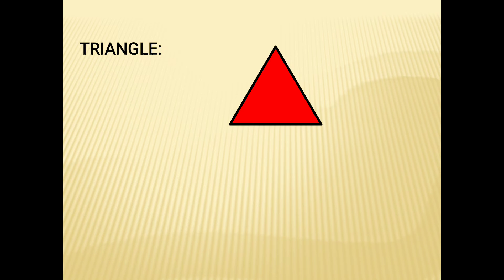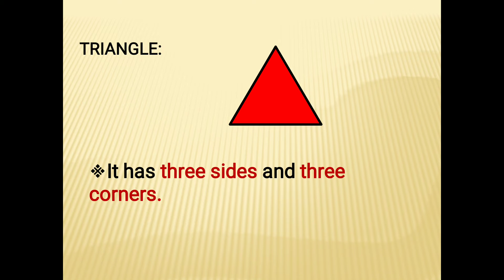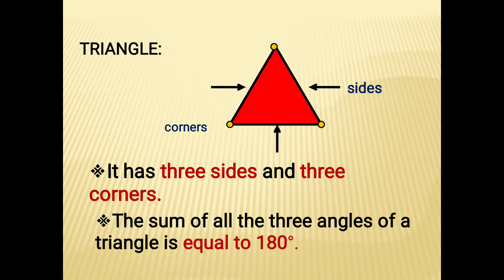The next shape is the triangle. This is a triangle. It has three sides and three corners. The sum of all three angles of a triangle is equal to 180 degrees.